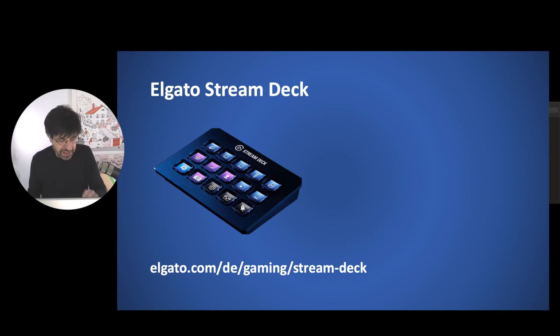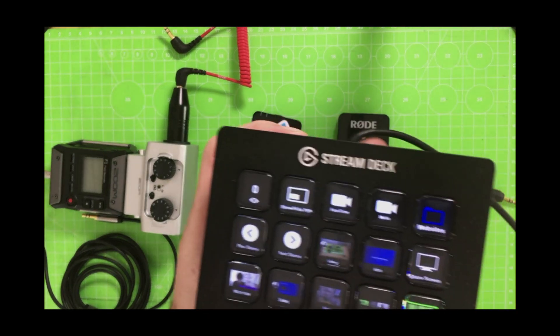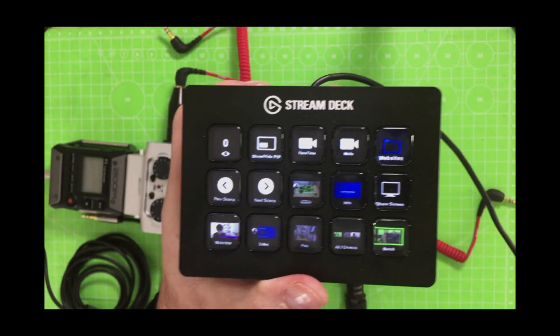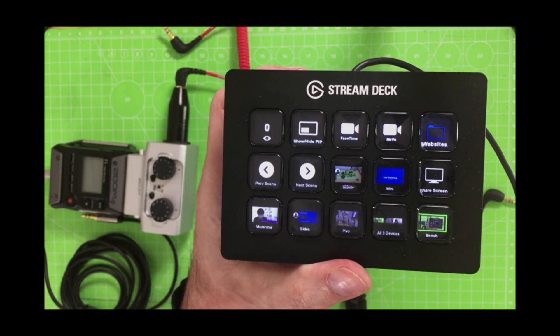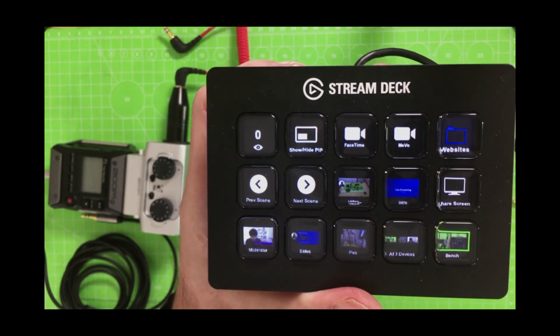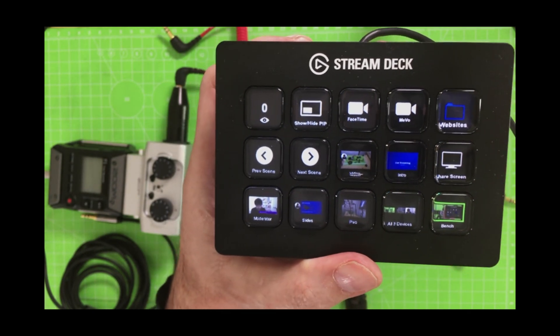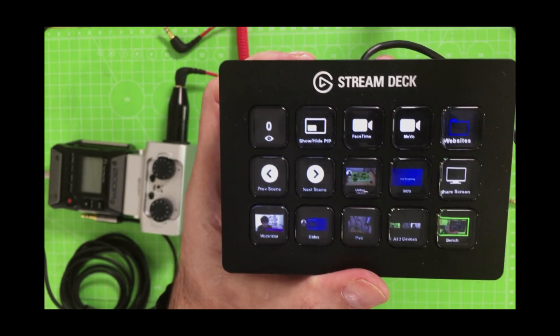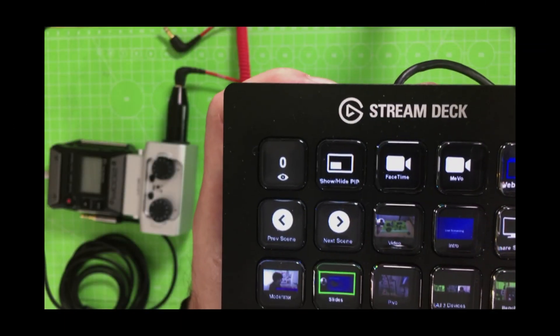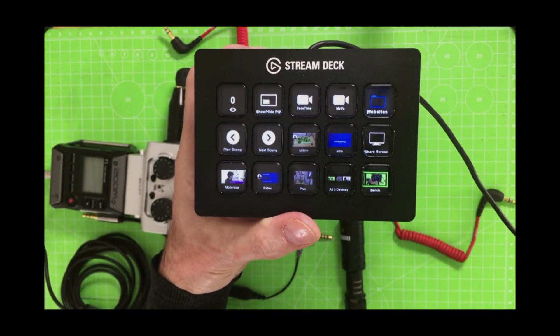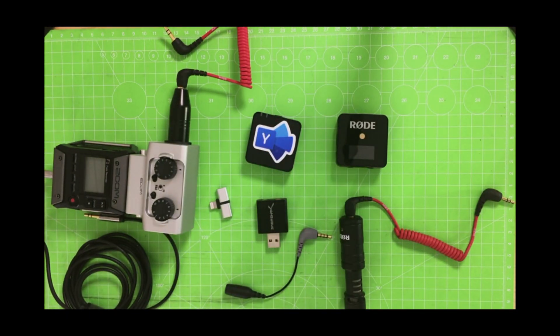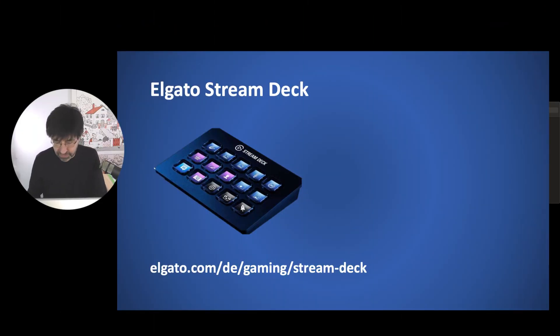Next, the Elgato Stream Deck. This is very cool stuff. Elgato has produced several versions — I think three versions with a different number of keys. This is the 15-key version. On each key, I can put commands for Ecamm, and then I can switch to full screen, to the presentation, or back to my iPhone SE for the camera. Cool stuff.